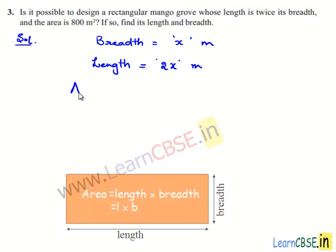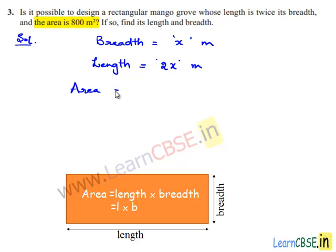We know that area of the rectangle is equal to length times breadth. Length is 2x meters and breadth is x meters, so area becomes 2x times x meter square.